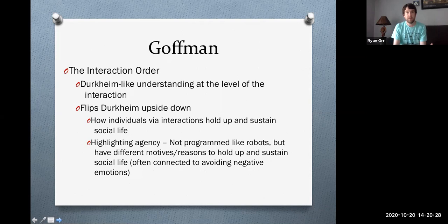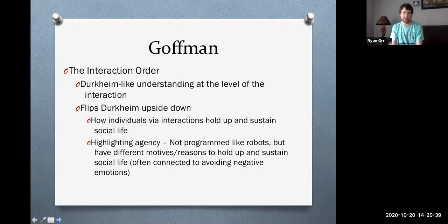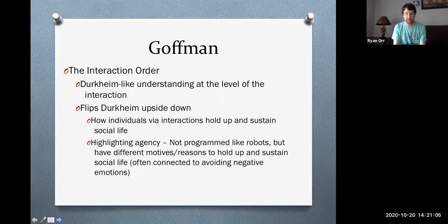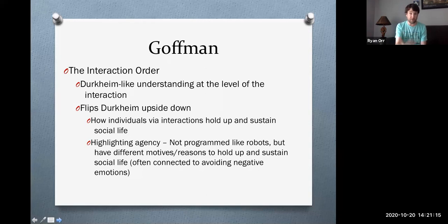When we see people working together through their interactions to build and create social life, we also see agency being highlighted. Unlike Durkheim, who basically says we're all socialized to act in certain ways — painting a picture of people as very robotic with no free will or agency — Goffman says we may act in ways that uphold and sustain a culture, but we have different ways of doing it, different ways to practice culture, and different motives for actually doing it.